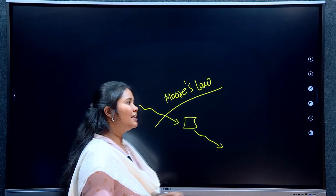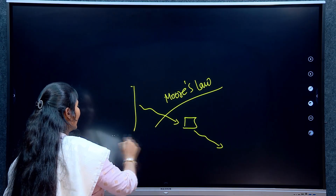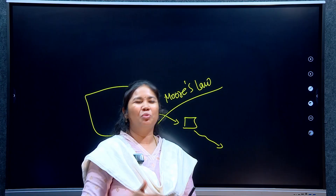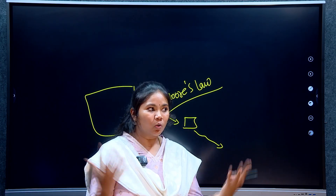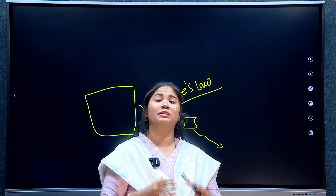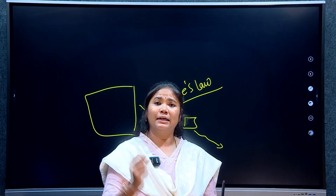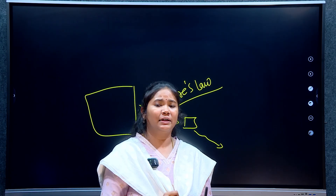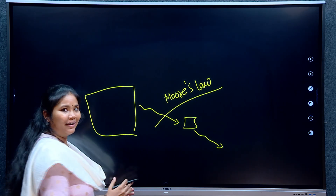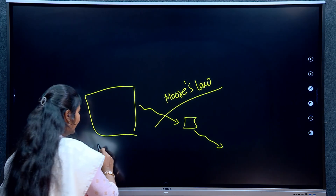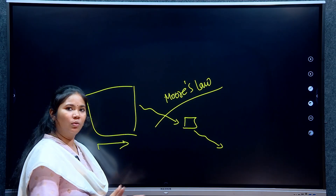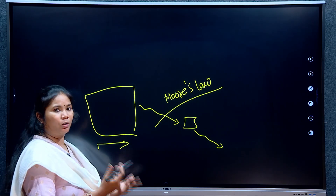In the initial days, the processor size was too large — it consumed a complete room. You would have heard that computers used to be room-sized. In the initial days, devices were large because of the processing unit. A device performs based on instructions, and those instructions are based on programming.